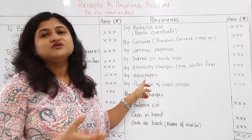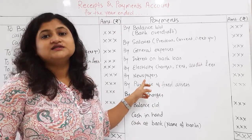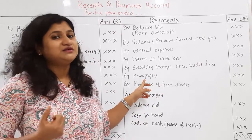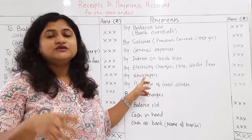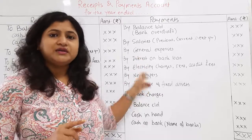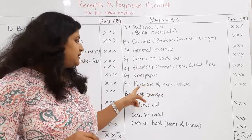Next: newspapers. Newspapers and similar items are daily-use expenses for the organization, and therefore they are recorded on the payment side.